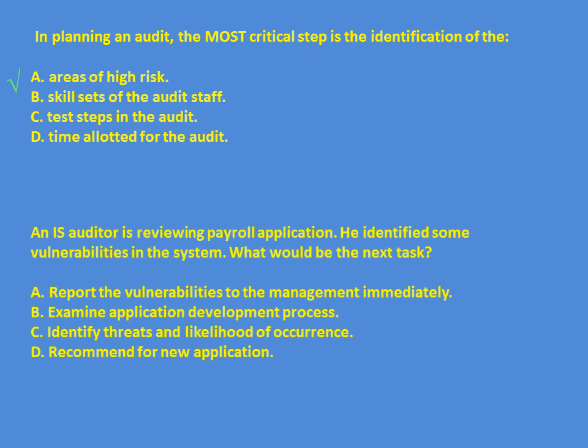Next question: A CISA auditor reviewing a payroll application identifies some vulnerabilities. What should he do — report the vulnerabilities to management immediately, examine the application development process, identify threats and likelihood of occurrence, or recommend a new application? Vulnerabilities can have major, minor, or no impact, so reporting immediately is premature. Examining the development process is irrelevant at this stage. The correct next step is to identify threats and likelihood of occurrence, after which reporting or further action can be determined.